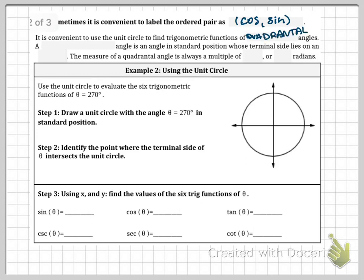Quadrantal angles. A quadrantal angle is an angle in standard position whose terminal side lies on an axis. The measure of a quadrantal angle is always a multiple of 90 degrees, or pi over 2 radians.